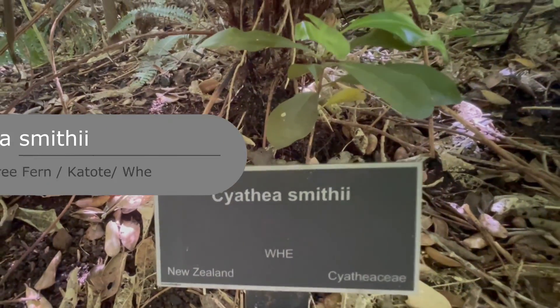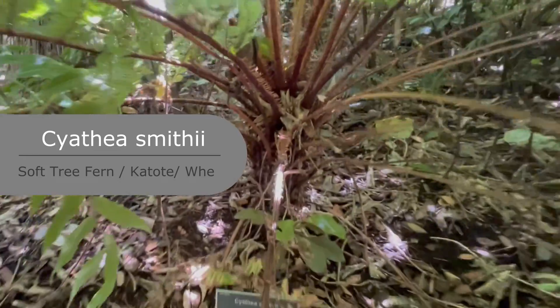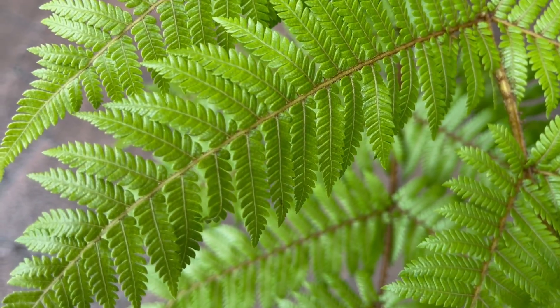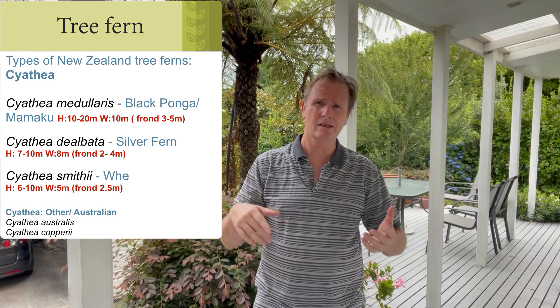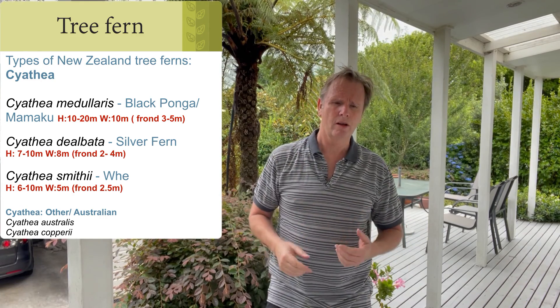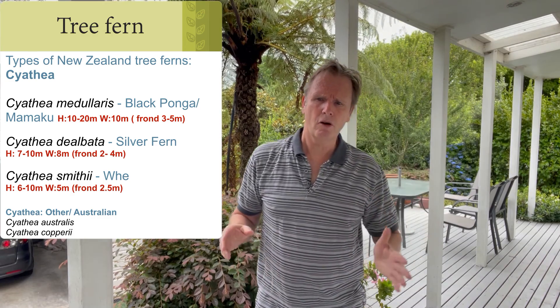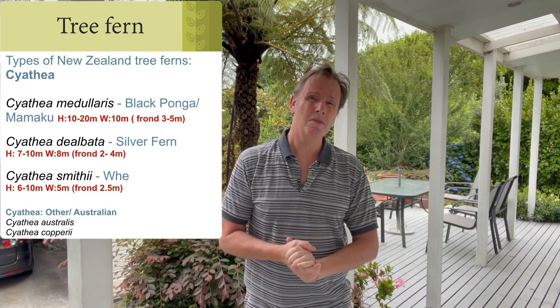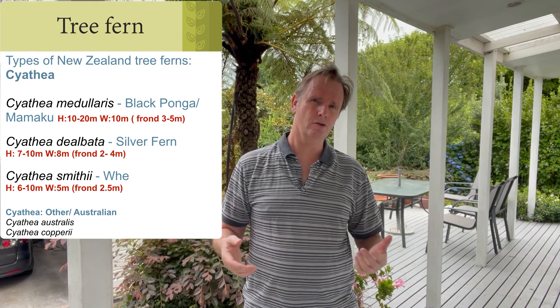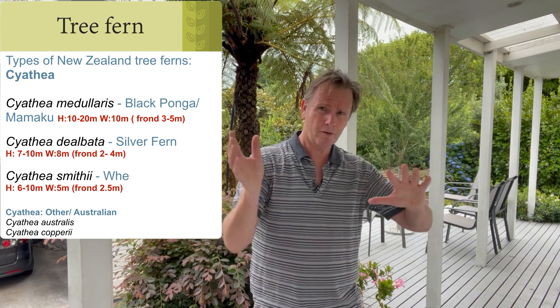There's a third Cyathea called the soft tree fern, Cyathea smithii — if you touch the leaf it's very soft, and it was used to lie on. Cyathea smithii reaches around 8 to 10 meters, and the black ponga reaches about 10 to 12 meters eventual height. In terms of growth rates, the black ponga is the fastest growing tree fern, while the others are medium growers — you have to wait a bit, they're not super fast.